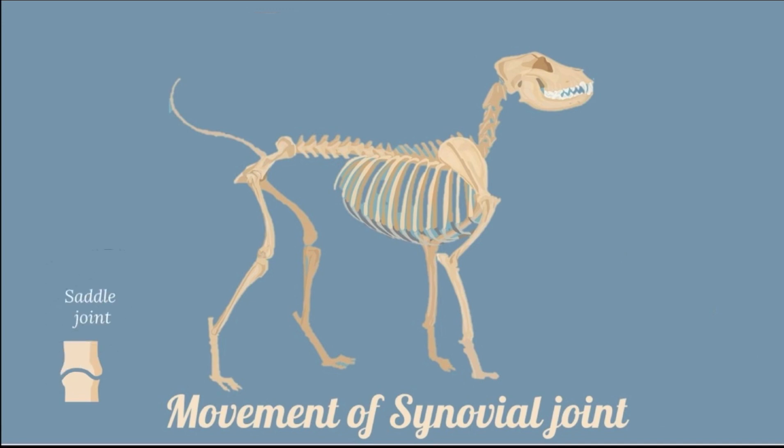The saddle joint is a biaxial joint with the articular surfaces of the two bones concave in one direction and convex in the other. It allows the same movement as an ellipsoid joint, permitting all types of movement except rotation. Examples are the carpometacarpal joint of the human thumb and the interphalangeal joints of the dog.